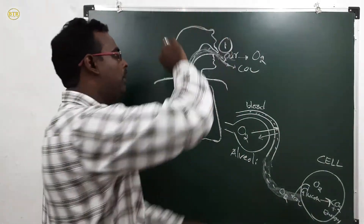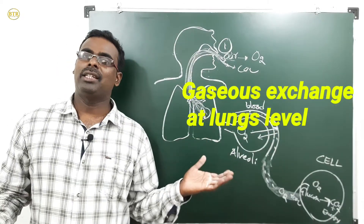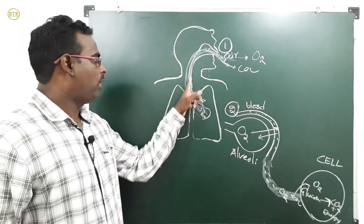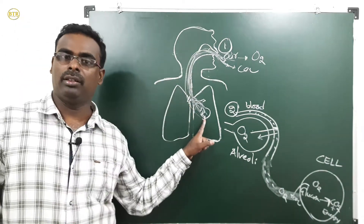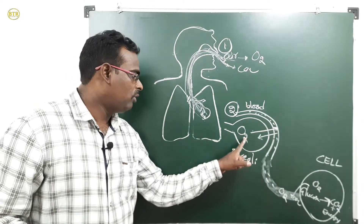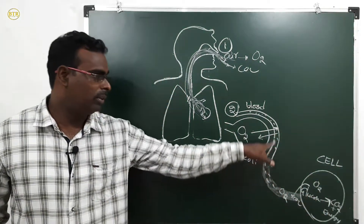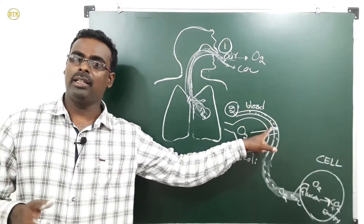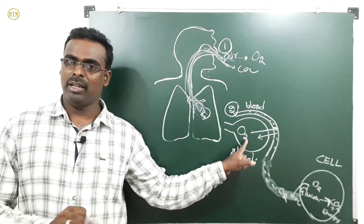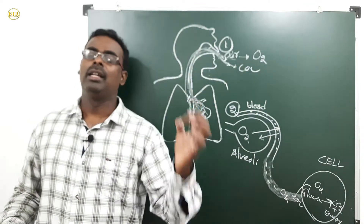The second step is gaseous exchange at lungs level. When oxygen enters the body, it reaches the lungs. Oxygen moves from the alveolus into the blood. Whatever carbon dioxide is present in the blood moves from the blood into the alveoli. So the exchange of gases — oxygen and carbon dioxide — occurs between the alveoli and blood. That is the second step.